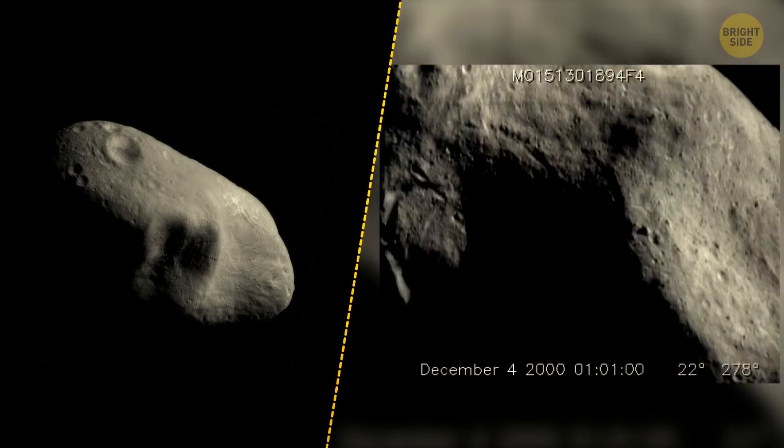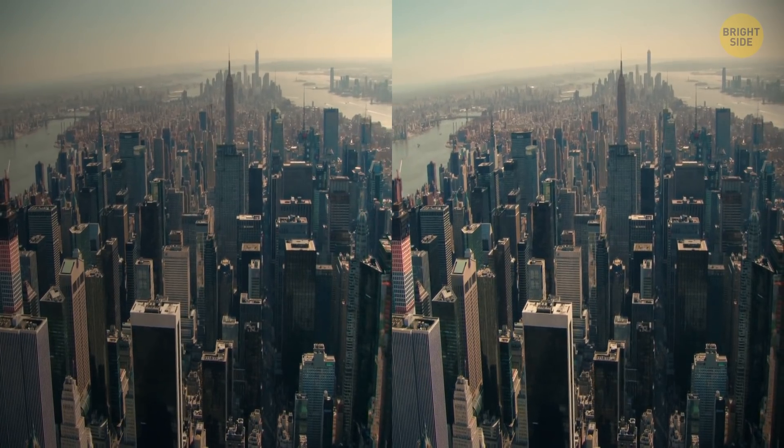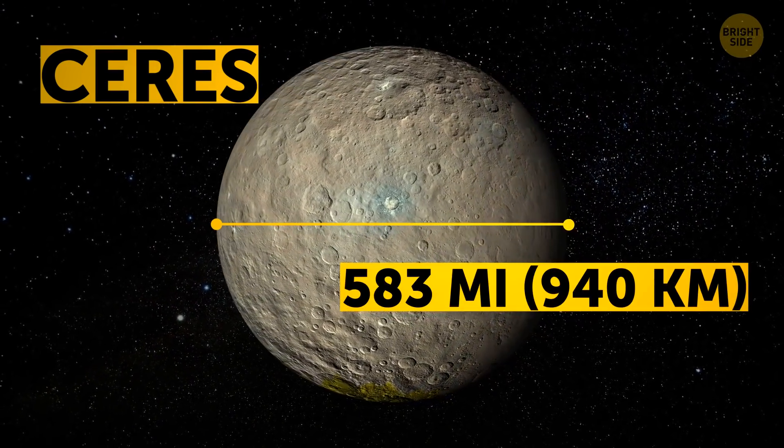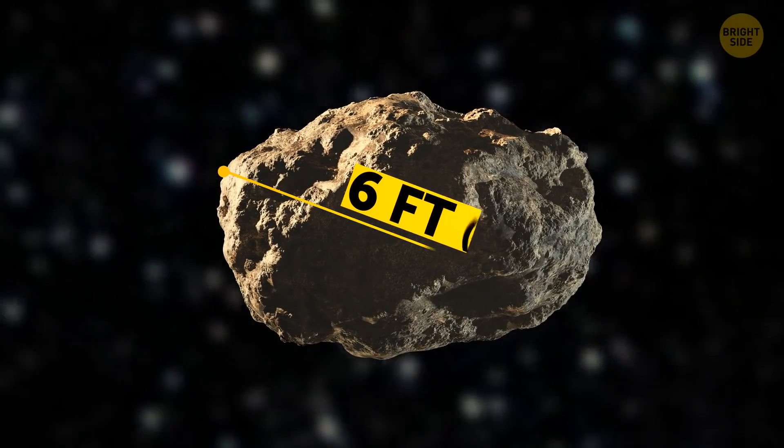Potato-shaped, rotating every 5 and a half hours, the size of two Manhattans. For comparison, the biggest asteroid discovered is 383 miles across, while the smallest one is around 6 feet wide.